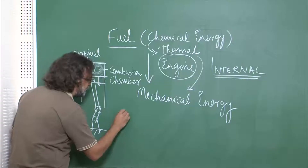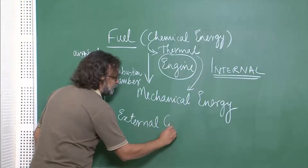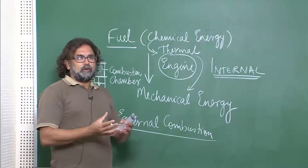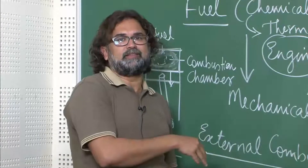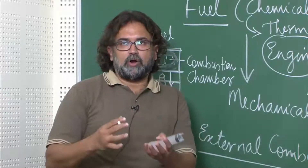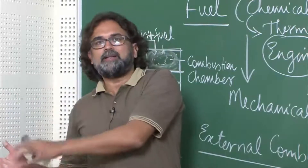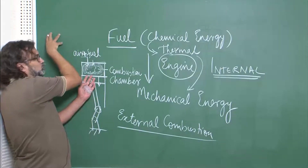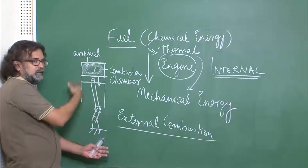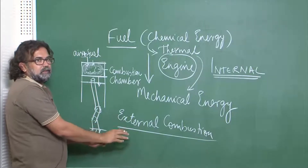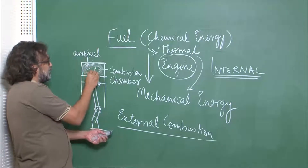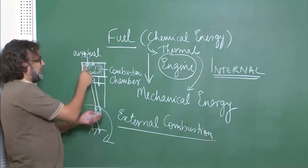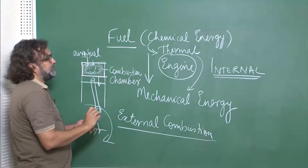We can also think of an external combustion engine — for example, you can burn wood or coal, generate some steam, and then that steam actually runs the engine. In that case, the enthalpy is added outside the main engine. If you have some steam or compressed gas burnt outside and that enthalpy is brought in to run this piston, this is called an external combustion engine. But in this course, we are primarily dealing with an internal combustion engine, where the addition of enthalpy occurs inside the system itself.